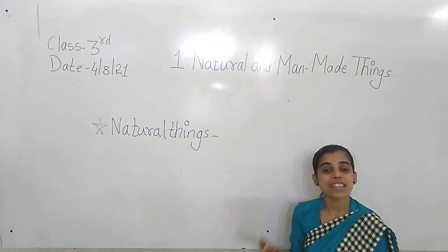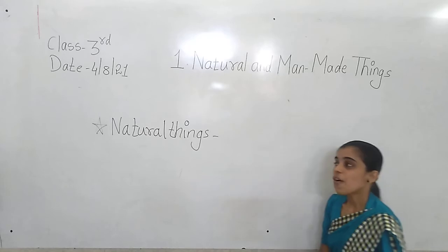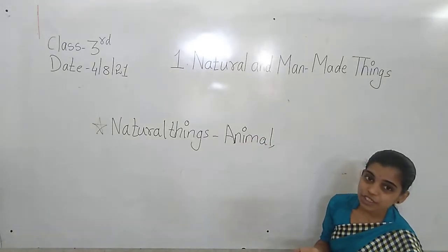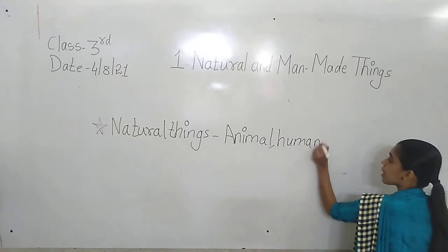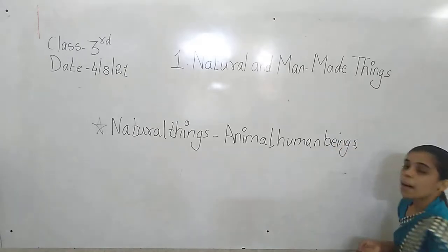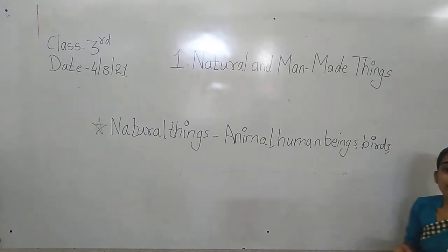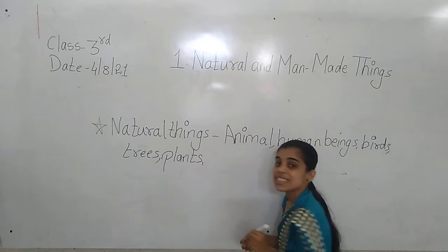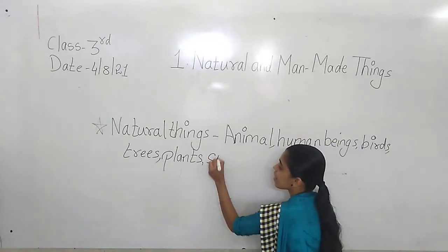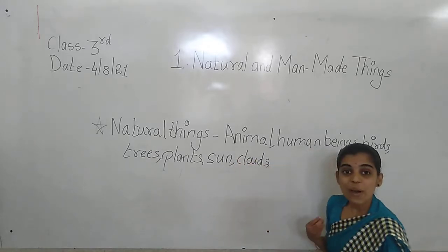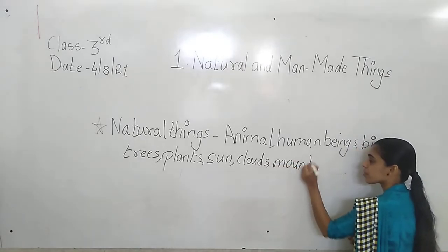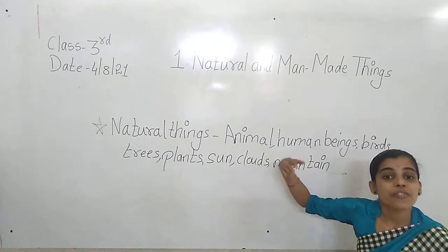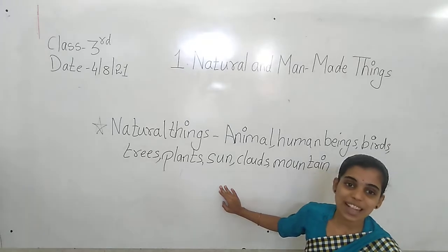Give me some examples of natural things children. Animals - very good. We human beings are natural things. Earth, birds, trees, plants, sun, clouds, mountains. These are some natural things. We get them freely on the earth, so we call them natural things.